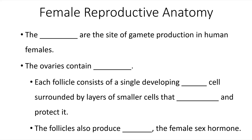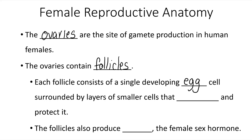The ovaries are the site of gamete production in human females, and the ovaries contain structures known as follicles. Each follicle consists of a single developing egg cell surrounded by layers of smaller cells that nourish and protect it. The follicles also produce estrogen, the female sex hormone.